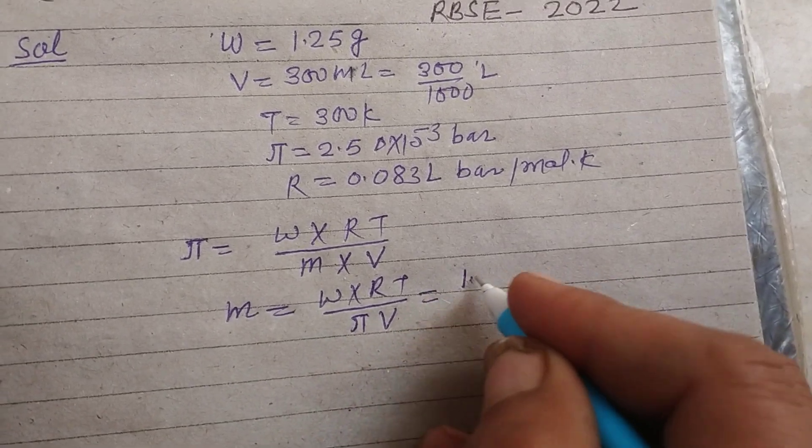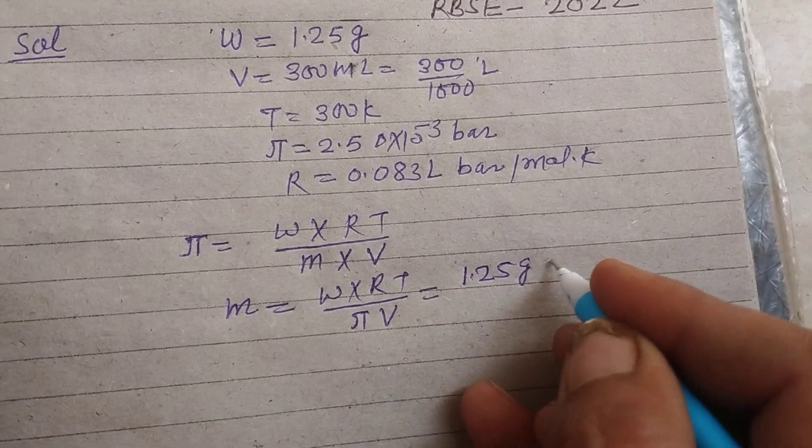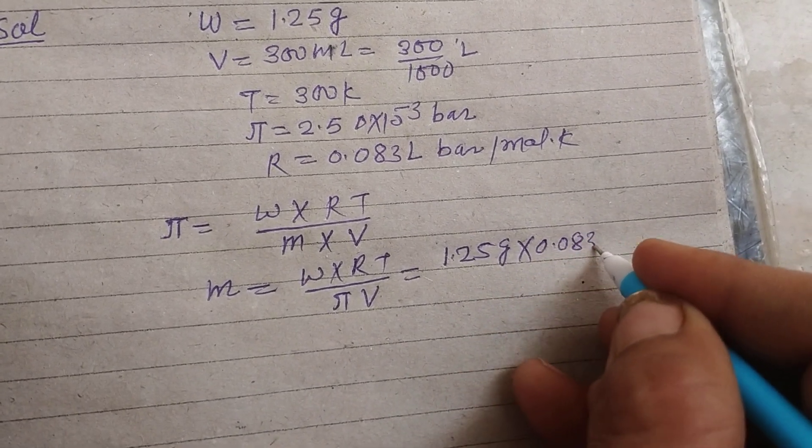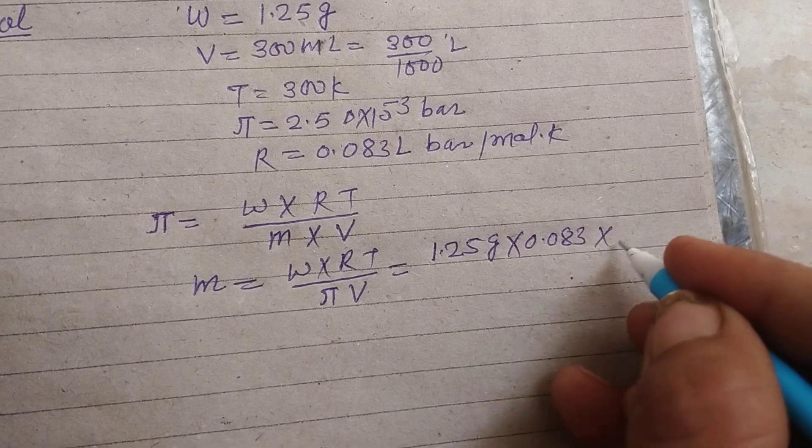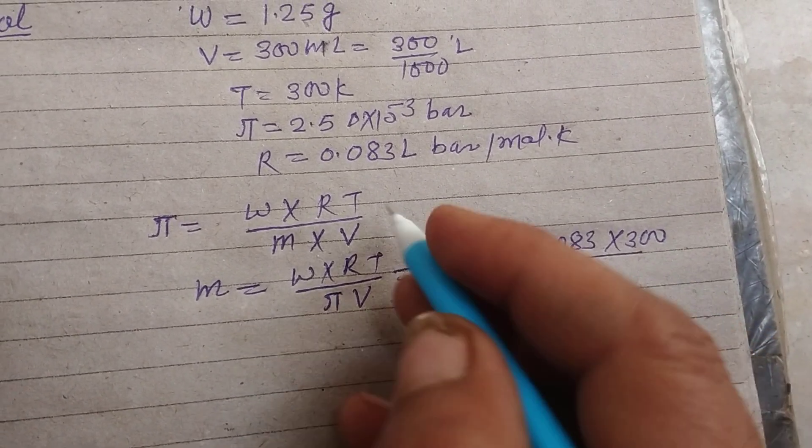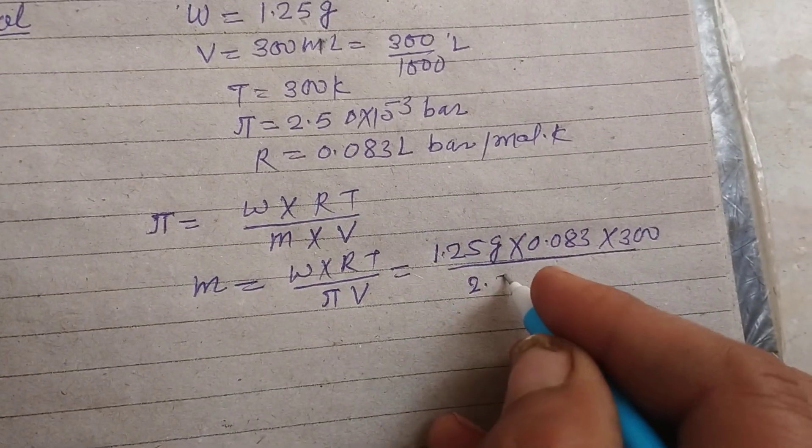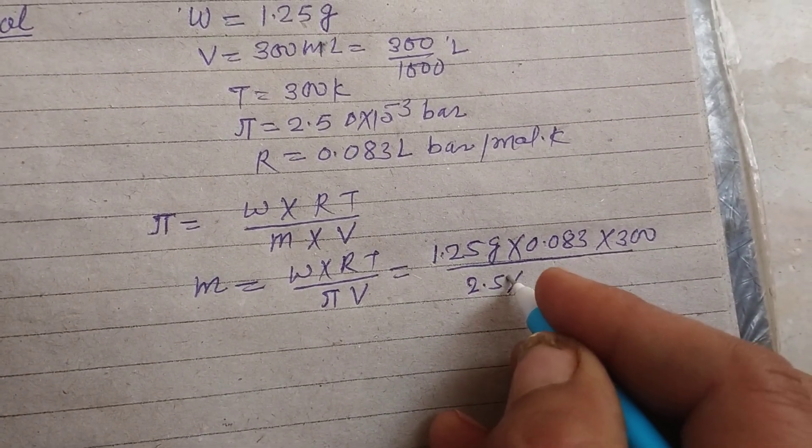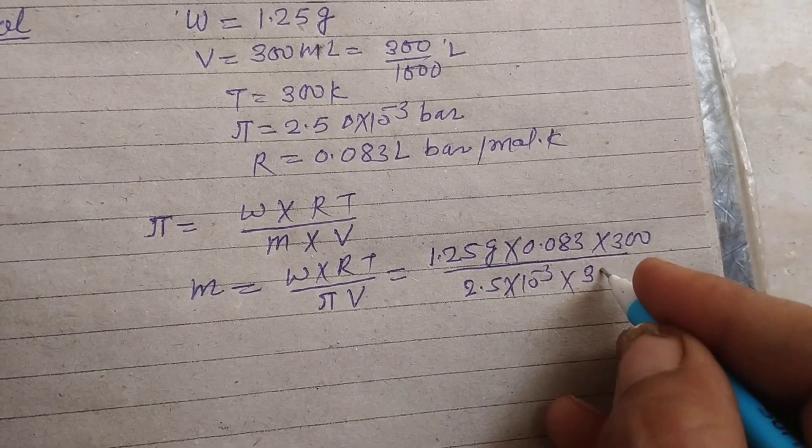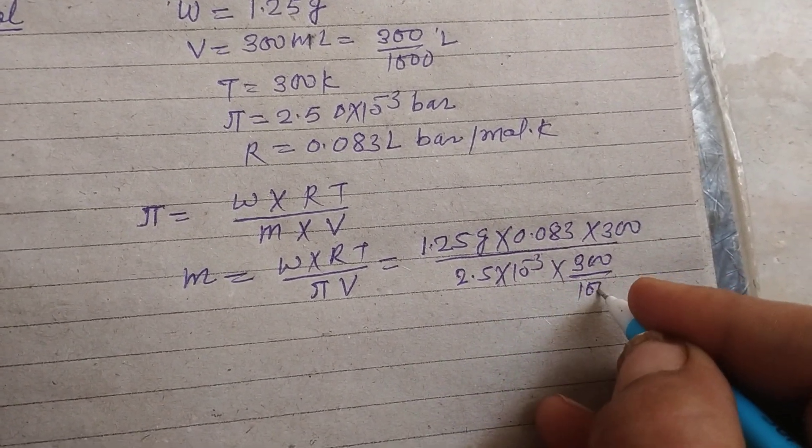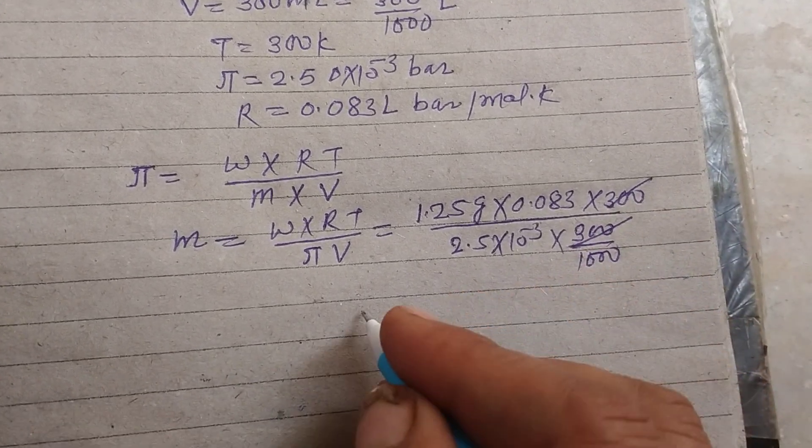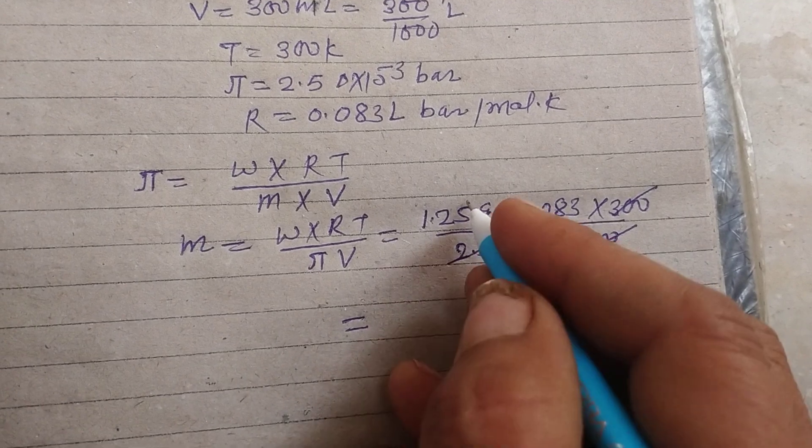So W is how much? 1.25 gram. And R is 0.083 into T is 300 Kelvin upon pi is given to us 2.5 into 10 to the power minus 3 into volume is 300 upon 1000. So this 300, 300 cancel.